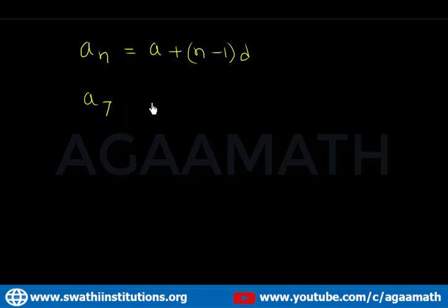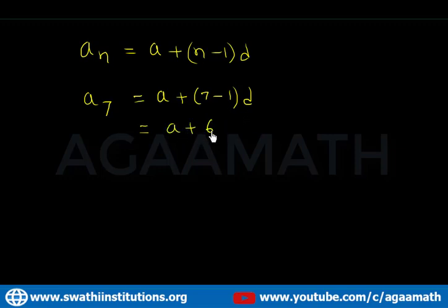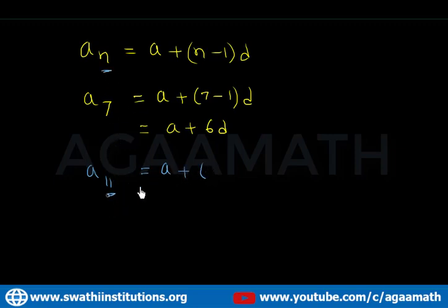For example, if I would like to find the seventh term, that means a7. So a7 = a + (7 minus 1) times d = a + 6d. Similarly, for a11, in the place of n I substitute 11, so a11 = a + (11 minus 1) times d = a + 10d.